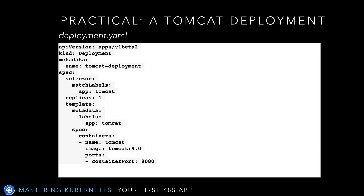We're going to keep it simple. We'll define a deployment named tomcat-deployment that only has one replica — one instance of one Docker image. This image is named tomcat version 9.0. If we don't specify an external repository, Kubernetes will default to the public Docker Hub. Finally, we let Kubernetes know that the Docker container tomcat version 9.0 exposes port 8080.